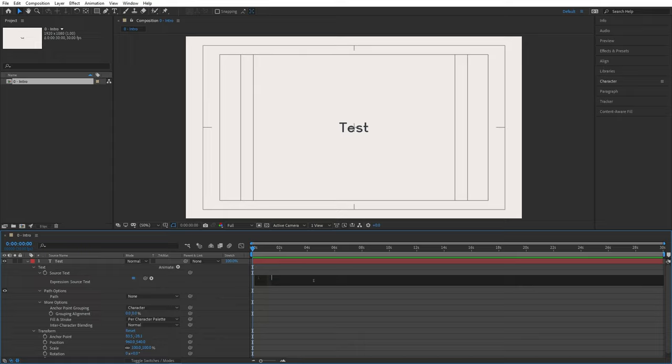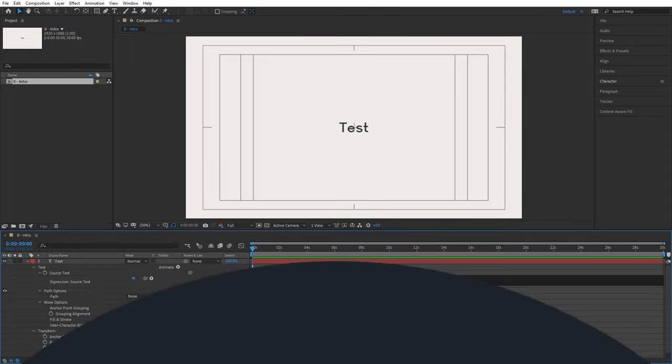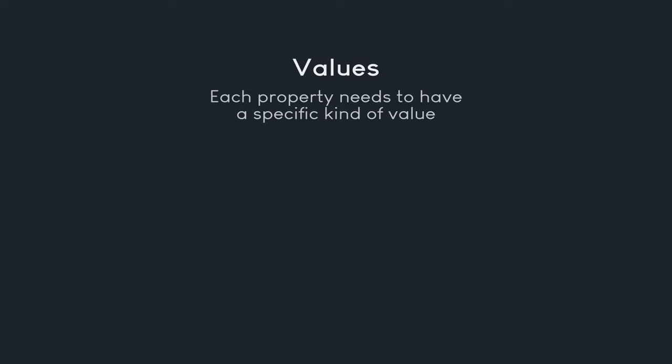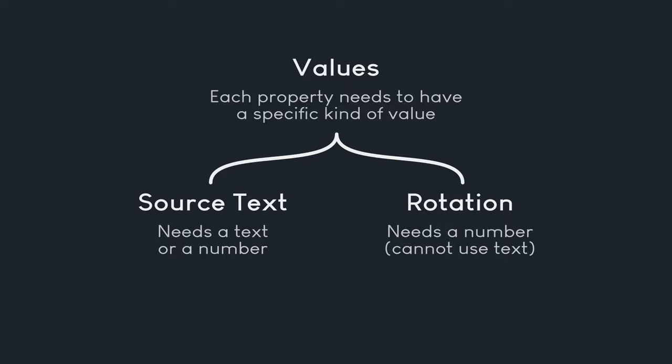Now, the most fundamental concept of coding in After Effects is values. Whenever you write code for a property, that code has to result in a value, and the value has to be appropriate for the property. For example, for the source text property you would need some kind of text, and for the rotation property you would need a single number — those are different kinds of values.